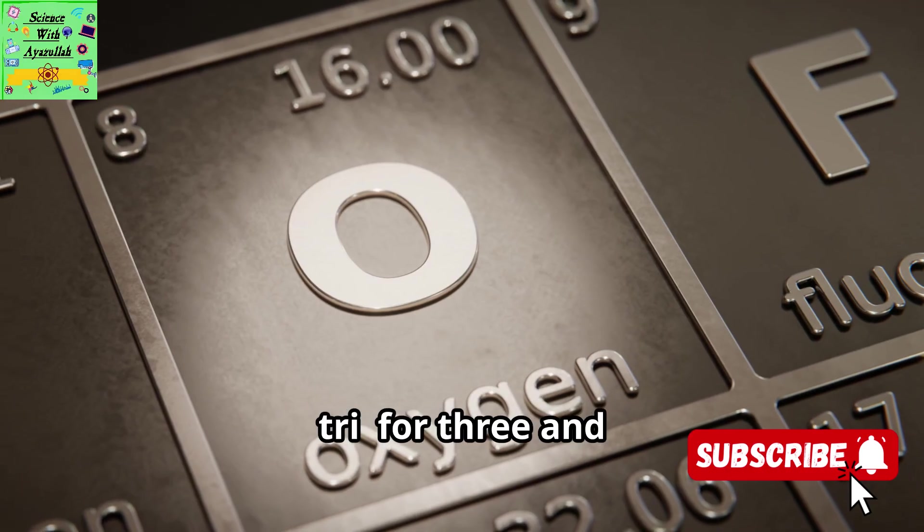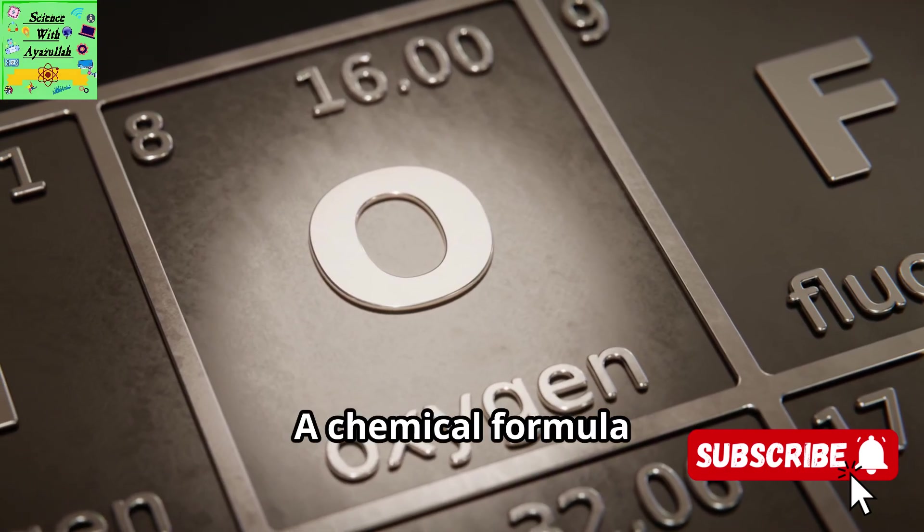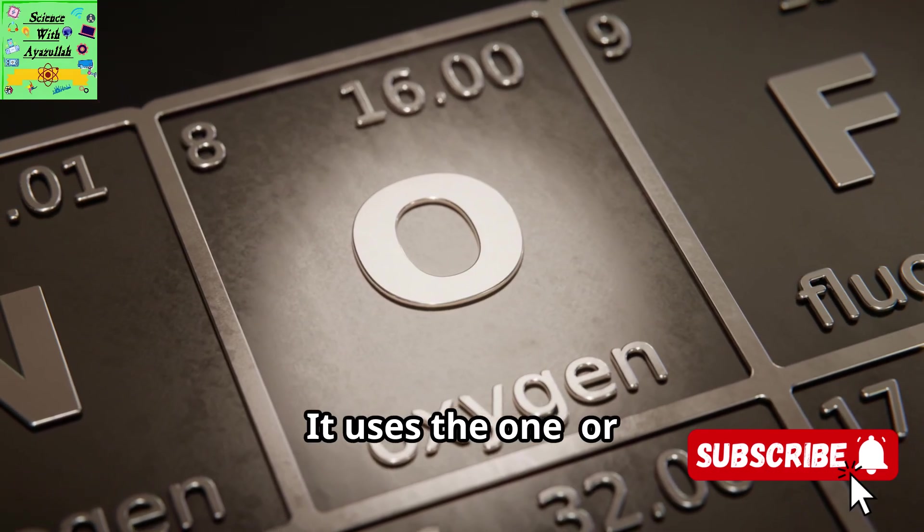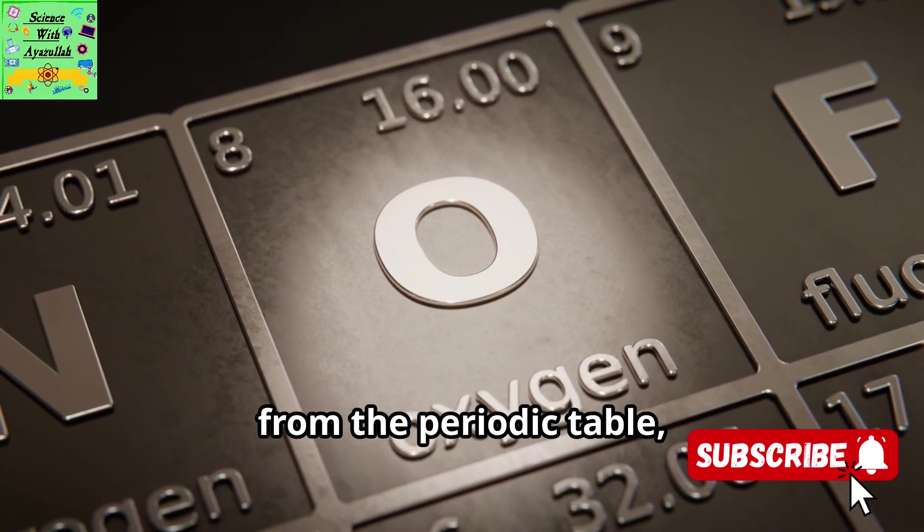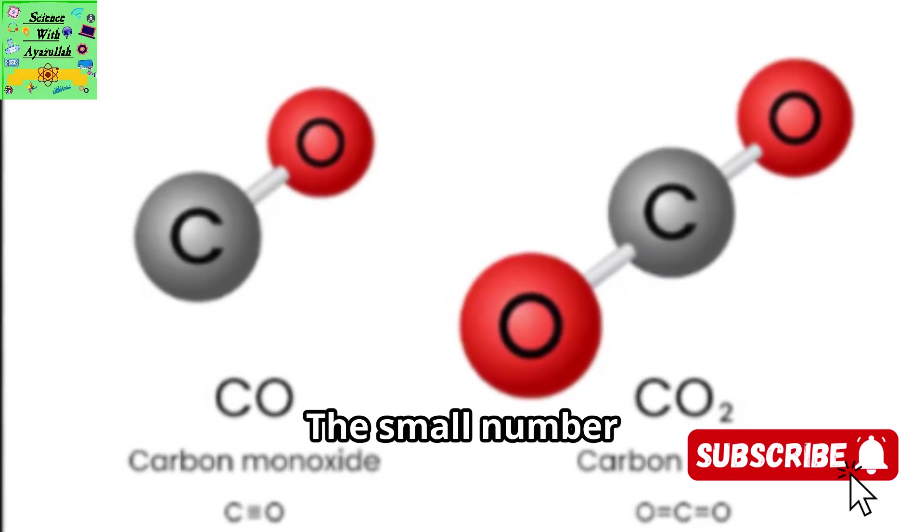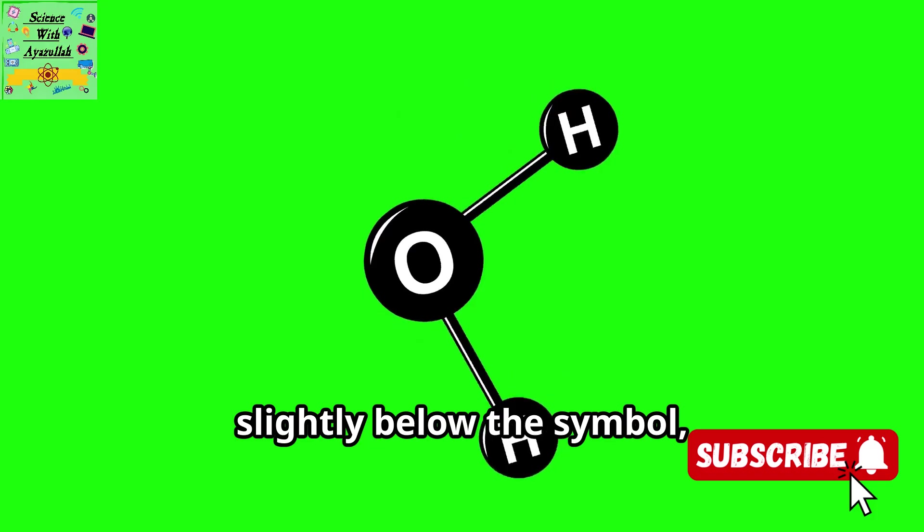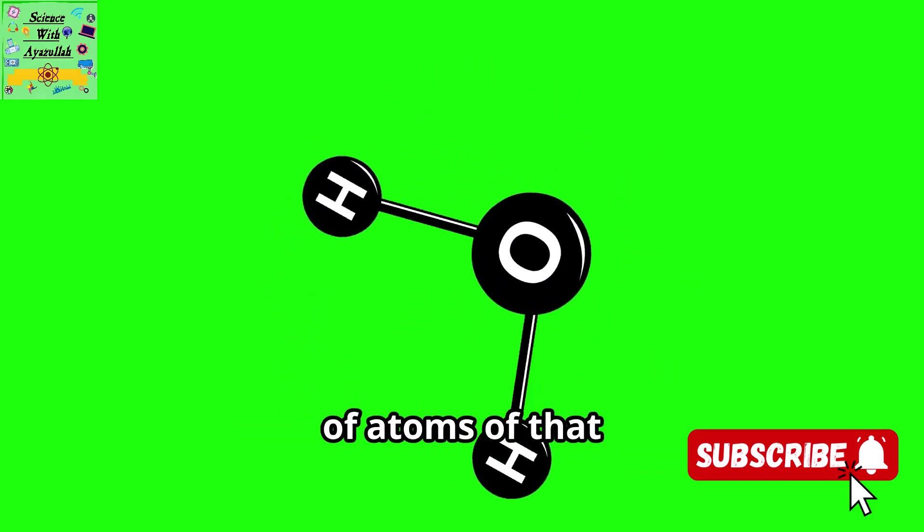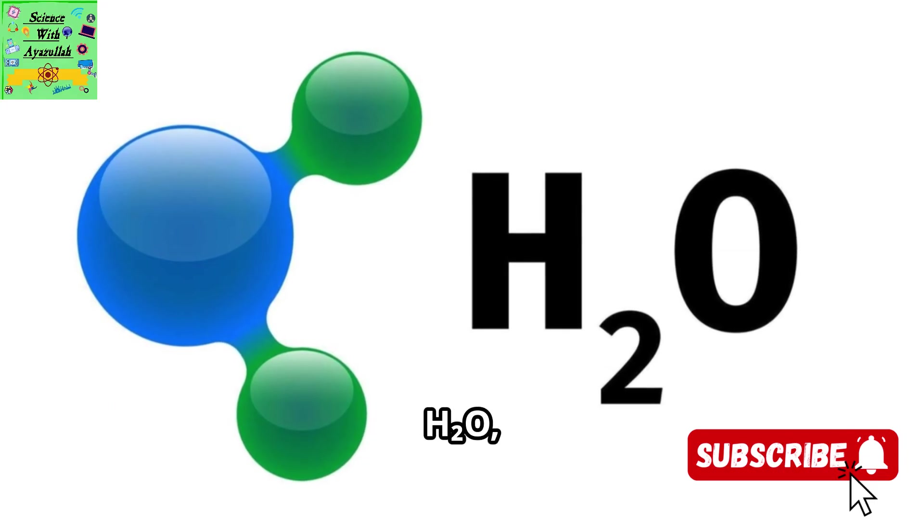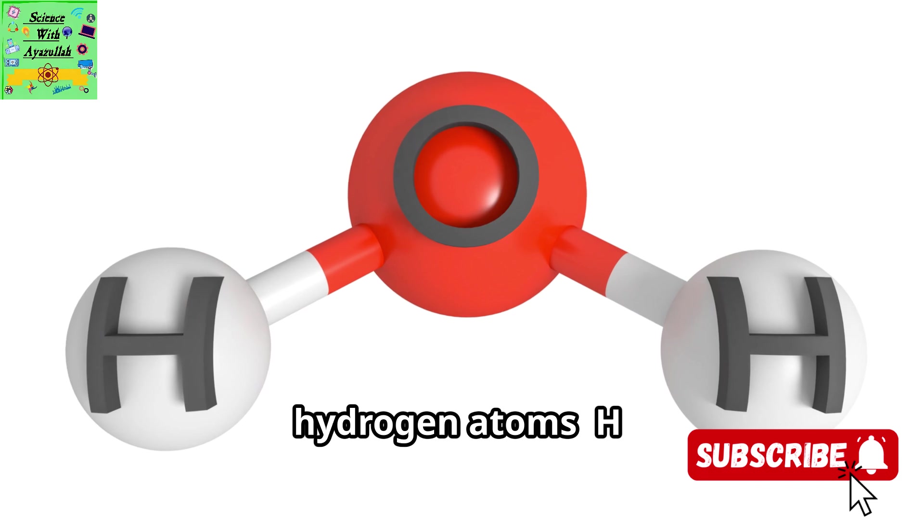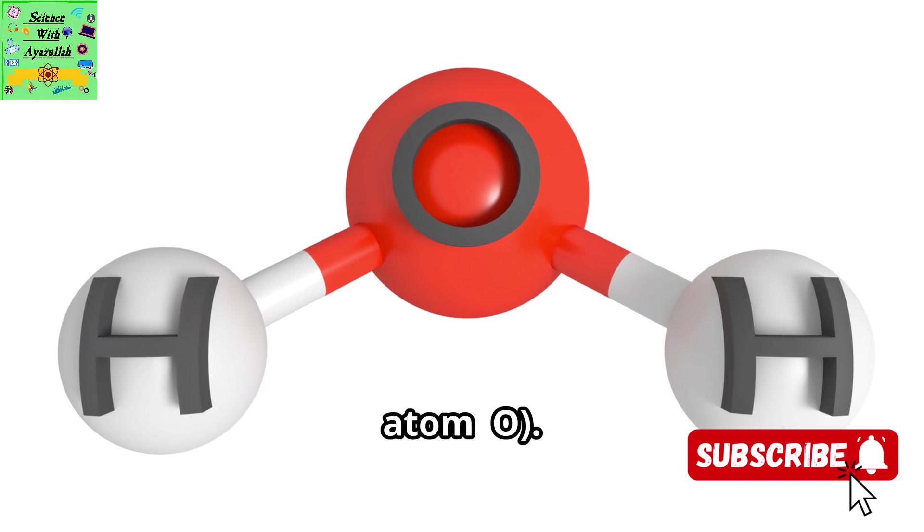A chemical formula is the shorthand version of the name. It uses the one or two letter symbols for the elements from the periodic table, like C for carbon and O for oxygen. The small number written after and slightly below the symbol, the subscript, tells us the number of atoms of that element in the molecule. So for water, H2O, the formula tells us there are two hydrogen atoms, H, for every one oxygen atom, O.